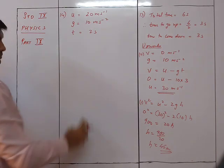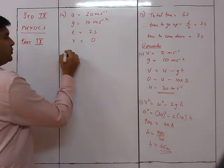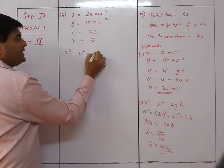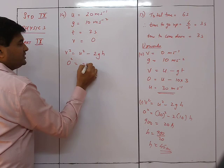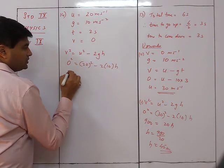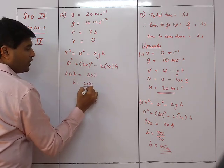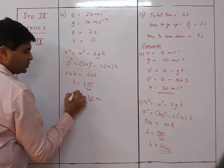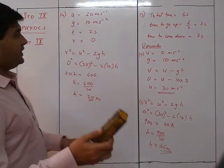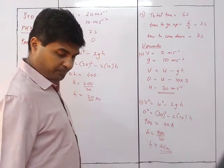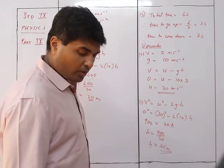v = 0, so 0 = 20² − 2 × 10 × h, giving 20h = 400, therefore h = 20 meters. The maximum height the pebble reaches when thrown at 20 m/s is 20 meters.